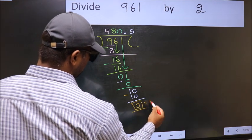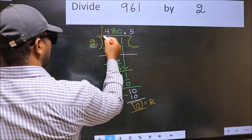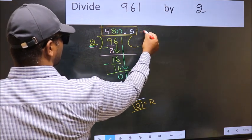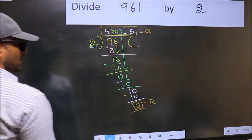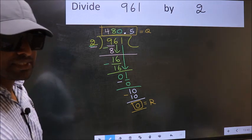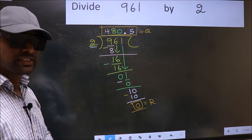So this is our remainder. And this is our quotient. Did you understand where the mistake happens? You should not do that mistake.